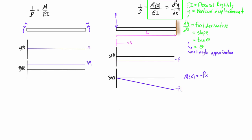Basically what we want to do is, given the type of structure and loading, we'll find what our moment in terms of x is — like in this case — and then all we need to do is integrate this expression twice to find out what y is. That will give us the position of the deformed structure at any value of x, and we can take the derivative to find the slope, because the slope is changing as we go along the length of the member.